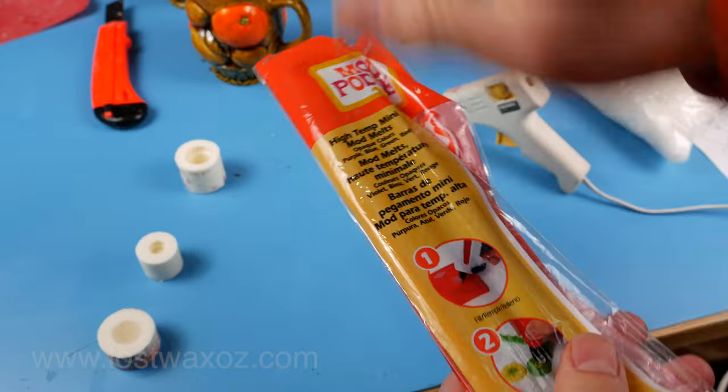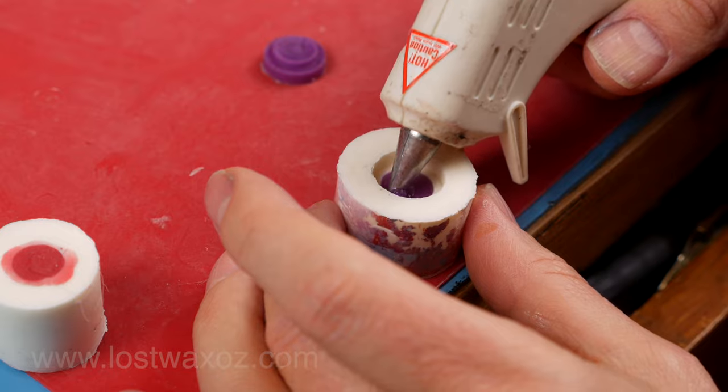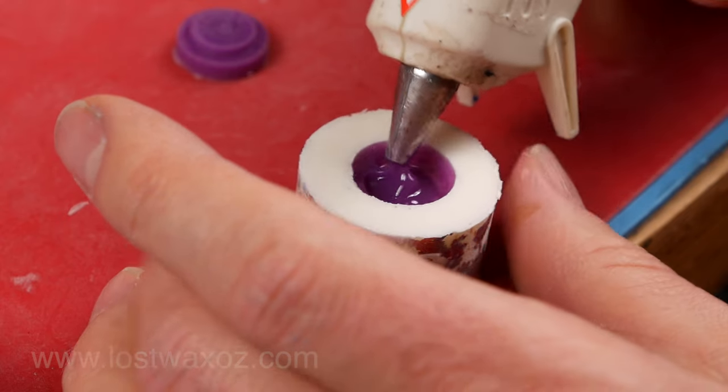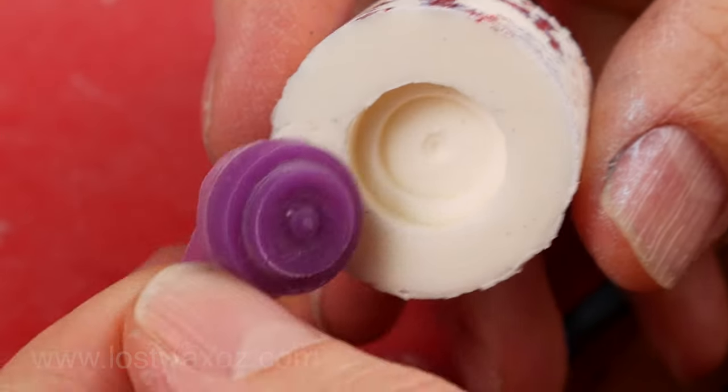The next question is what do you fill them with? I pulled out some mod melts which are basically like super fancy pants glue sticks. They worked reasonably well in the shallower mold but in the deeper molds I just couldn't get it to work without getting air bubbles trapped inside.